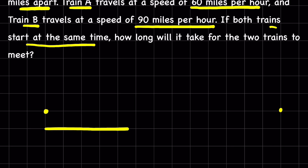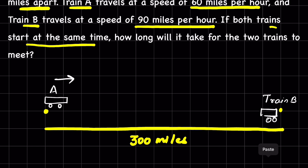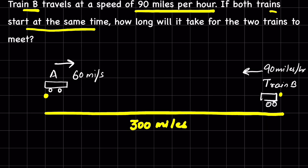Consider this is the distance between the two trains — they are 300 miles apart. Train A is traveling towards Train B, and Train B is traveling towards Train A. Train A's speed is 60 miles per hour and Train B's speed is 90 miles per hour. So how much time will it take for them to meet at a certain point?